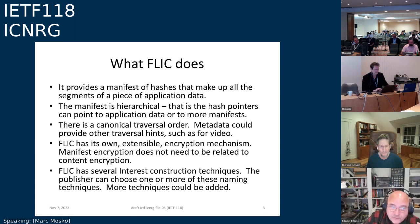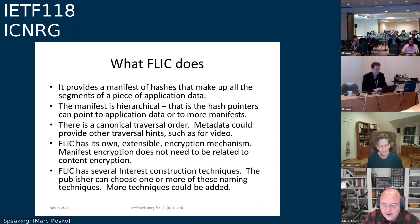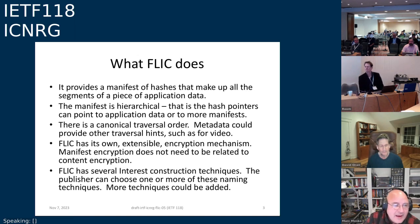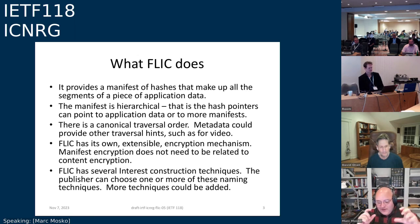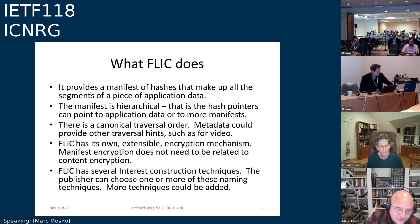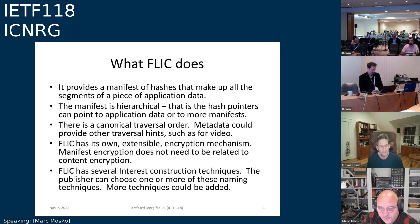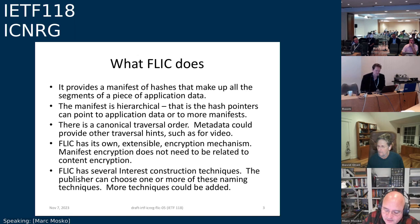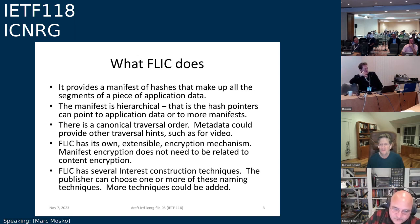FLICK provides a manifest of an object and provides all the hash values so you can request every specific object by hash name. It's hierarchical, so you can retrieve either more manifests or more application data depending on what the hash points to. There's a canonical traversal order, and if you retrieve all the application data in that order, it should reassemble the original file as intended. There are several interest construction techniques — this is how a consumer constructs a name based on information in the manifest. The update I'm going over is to one of those name construction techniques.